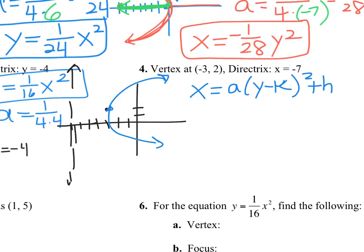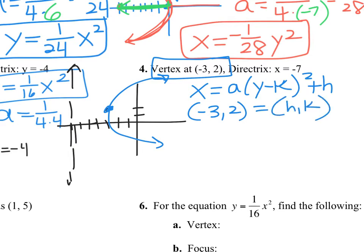It's a parabola not at the origin that goes left or right. H and K come from the vertex, which is negative 3, 2. So I have x equals blank times (y minus 2) squared minus 3. The tricky part: y goes with k, so you need y minus 2 squared, and the h value negative 3 goes on the outside.